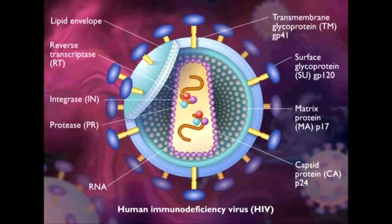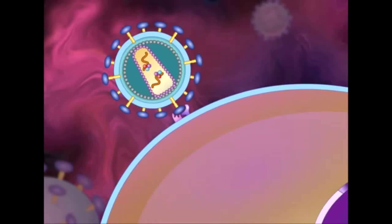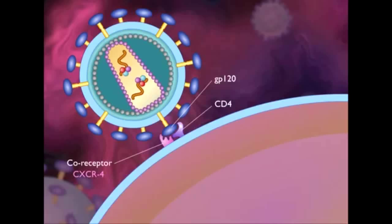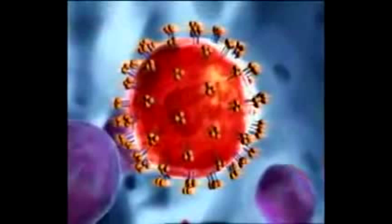To establish infection, HIV must first attach to its host cell. Attachment occurs by interaction between GP120 on the surface of the virus and the CD4 antigen receptor on the surface of the host cell. In addition to the CD4 receptor, there must also be a co-receptor on the host cell. The co-receptor differs for different host cell types. In T-lymphocytes, the co-receptor is called CXCR4, whereas on macrophages, the co-receptor is called CCR5.